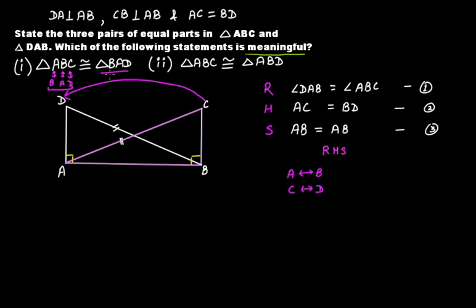Here we have BAD in the first statement, but ABD in the second — so ABD does not reflect the correct correspondence and is not meaningful. Congruency means that when you superpose one triangle on another, they cover each other completely and all three respective vertices fall on each other according to the correspondence. Therefore, triangle ABC is congruent to triangle BAD is the meaningful statement.